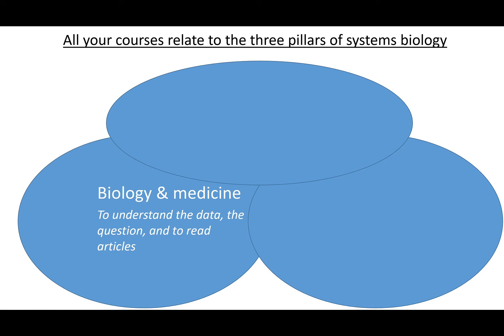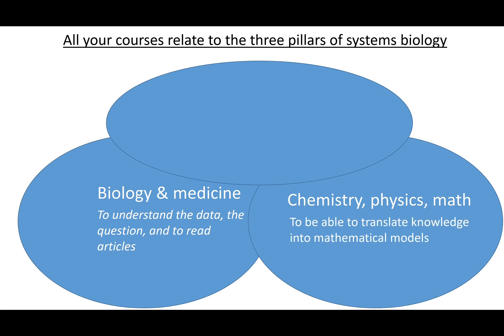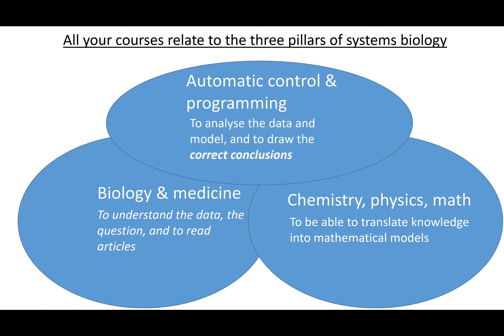What you need from biology and medicine is the ability to understand data, to understand the research questions in biology and medicine, and to read scientific papers and books. Chemistry, physics, and math form another pillar — what you take from those fields is the ability to translate knowledge about biology and medicine into mathematical models. The final pillar comes from fields like automatic control and programming, where you learn the ability to analyze the data and the model, and to draw the right conclusions about how the biological system works — conclusions you can typically only draw using mathematical models.